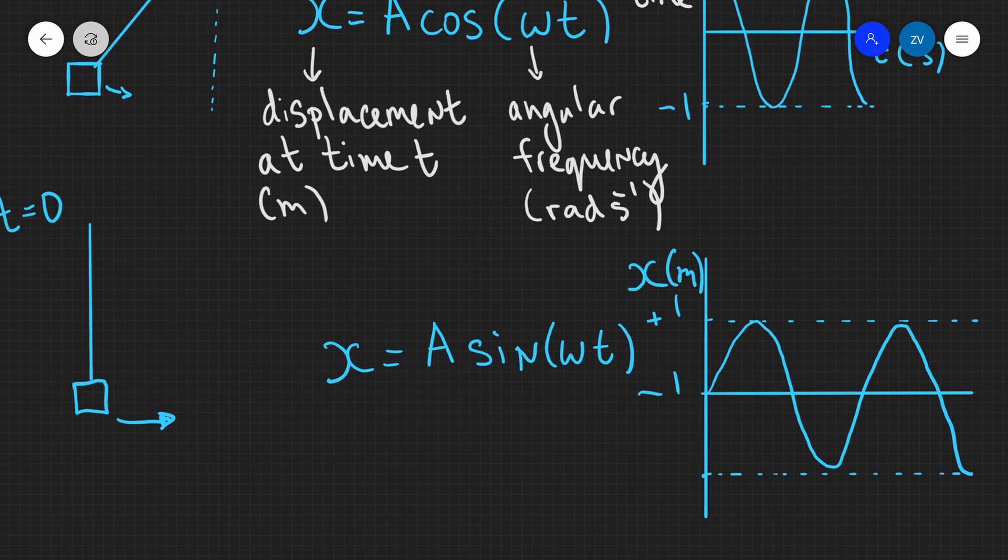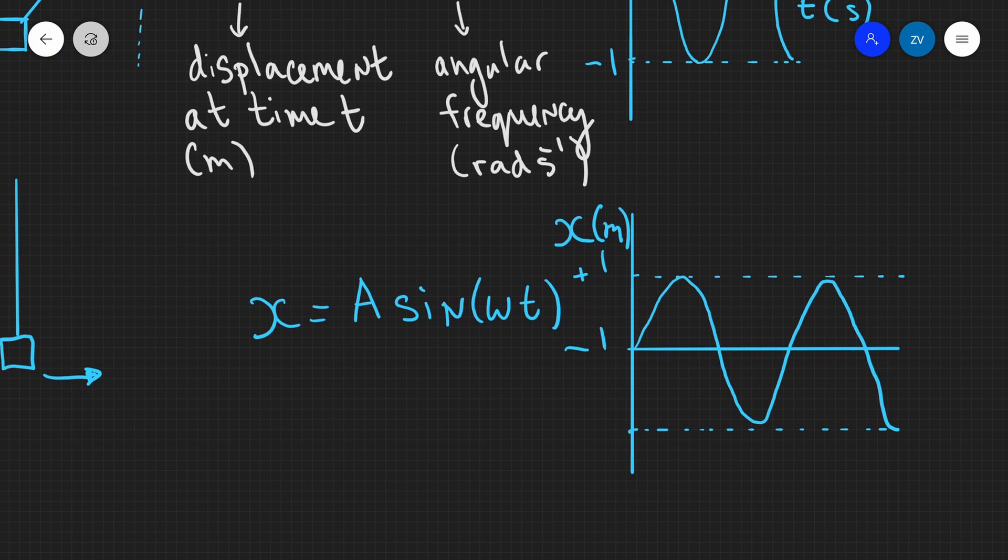This equation is very similar to the one above. In fact, it's just been shifted by 90 degrees. In this case, x is once again the displacement at time t, A is our amplitude, and omega is our angular frequency, t is the time.